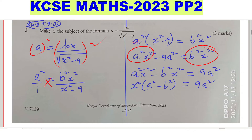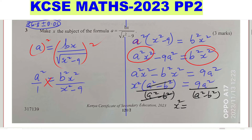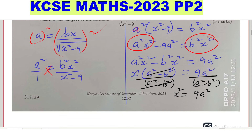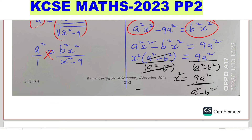To isolate x squared, divide both sides by a squared minus b squared. So x squared equals 9a squared divided by a squared minus b squared. We have not yet obtained x, so take the square root of both sides. The square root of 9a squared in the numerator gives 3a. The denominator cannot be simplified further, so leave it as the square root of a squared minus b squared.